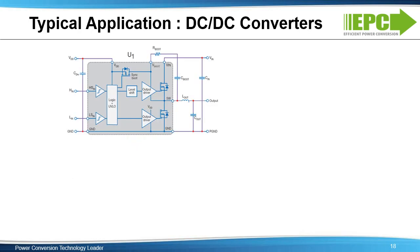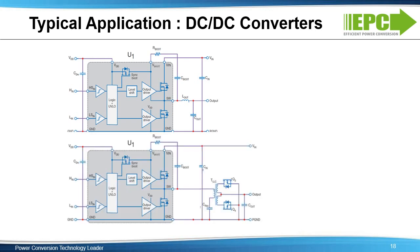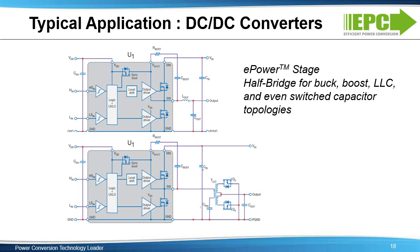The EPC-2152 is mainly targeted for use in DC-to-DC converters requiring high efficiency and small size. These are critical benefits for telecom, server, and client computing, industrial, automotive, and military markets. Also targeted are space and other radiation environments due to the unique properties of GaN IC construction. Different converter topologies can be built using the EPC-2152 half-bridge configuration. Customers are designing in these devices for buck and boost converters as well as LLC converters. Some customers are even trying the device in switched-capacitor topologies.